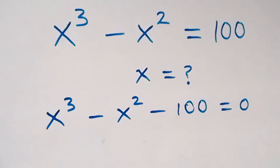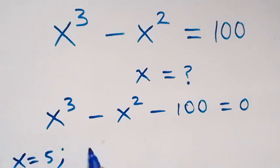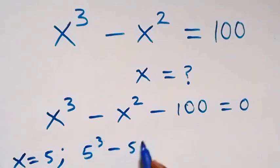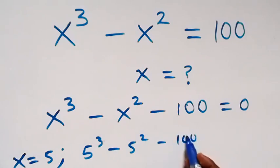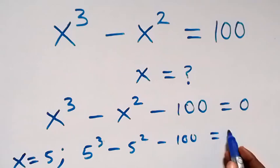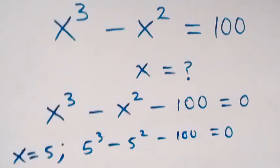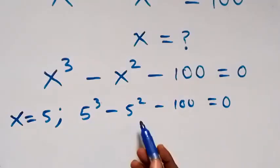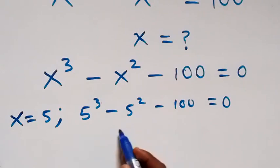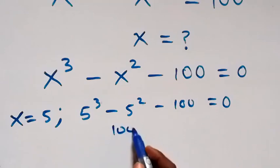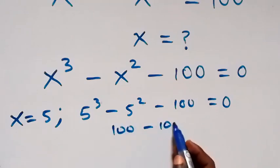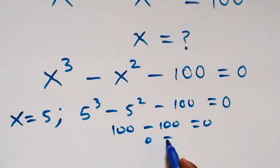...the factor of 100 that will make this expression equal to 0 is 5. So when we substitute x equals 5, this becomes 5 raised to power 3 minus 5 squared minus 100, and this equals 0, because we have 125 minus 25 which is 100, then minus 100, which equals 0. So 0 equals 0.